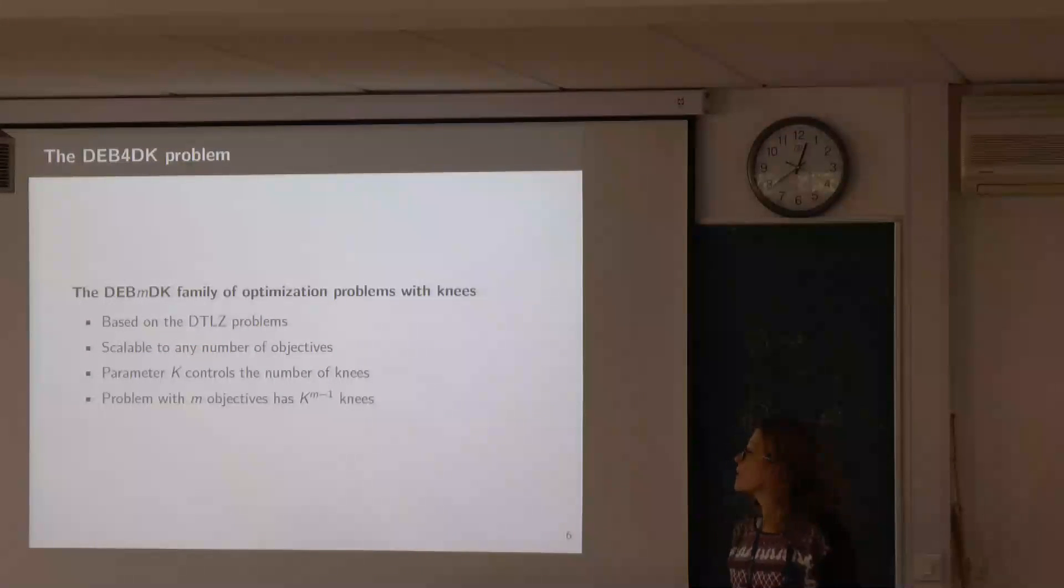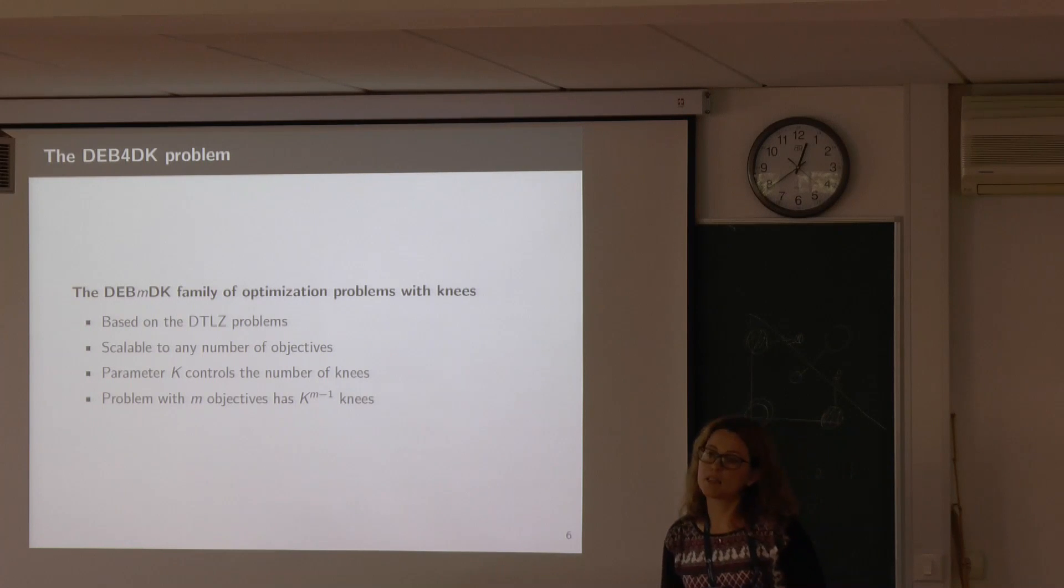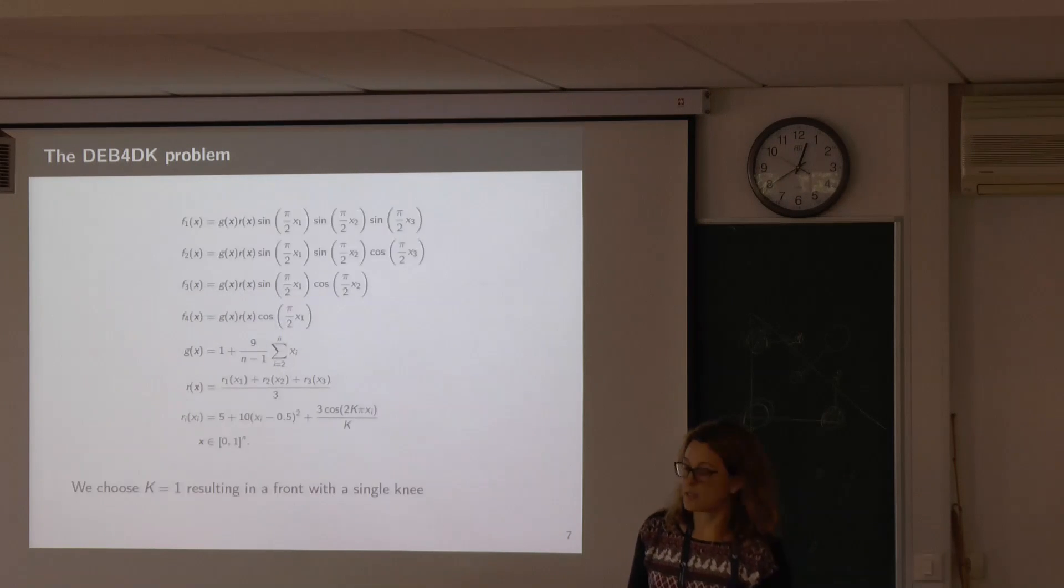We will be using this problem for four dimensions and showing these seven visualization methods. About the problem: it's a family of problems, actually, based on the very known DTLZ optimization problems, which are scalable to any number of objectives. What they did here was add an additional parameter to modify the problem, adding a parameter that controls the number of knees. Now you can have, for a problem with M objectives, you can generate a problem with K to the power of M minus 1 knees. This is, for example, the formal definition of this problem in the case of four objectives. What we did for starters is to select K equals 1 and get a front with a single knee.